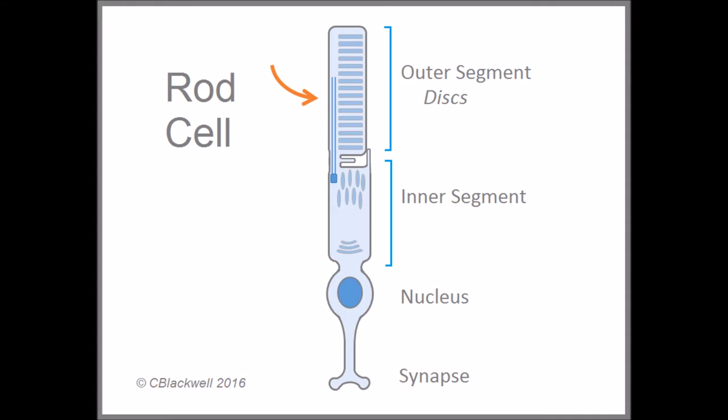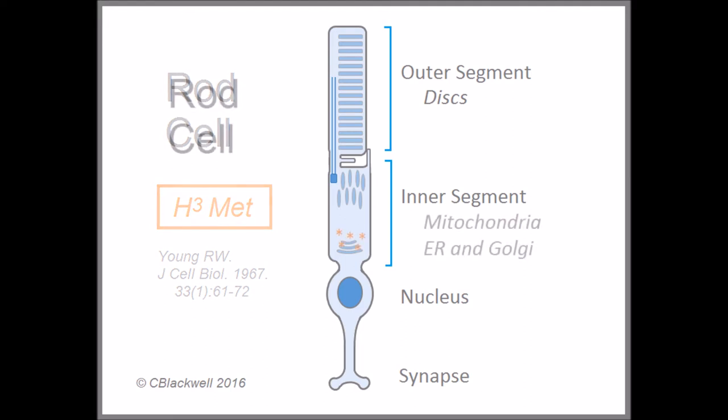Way back in the 1960s, a researcher named Richard Young did an historic experiment. He injected a radiolabeled amino acid, H3-methionine, which highlighted protein production, most of which would be as rhodopsin. The label showed up as expected, first in the endoplasmic reticulum, then traversed the Golgi apparatus, to accumulate in the connecting cilium and at the bottom of the disc stack.